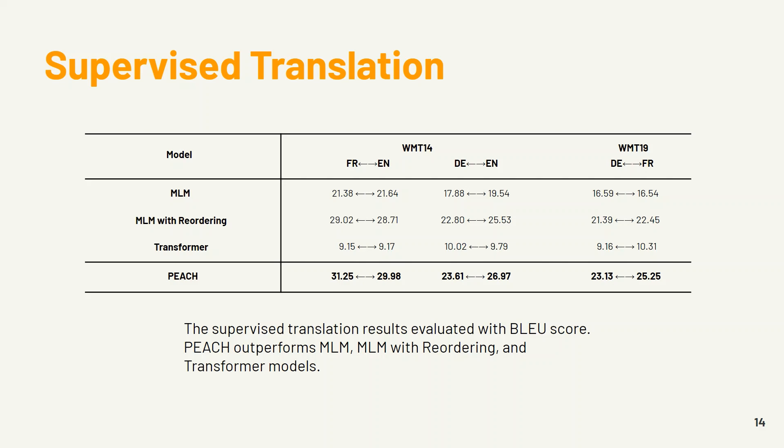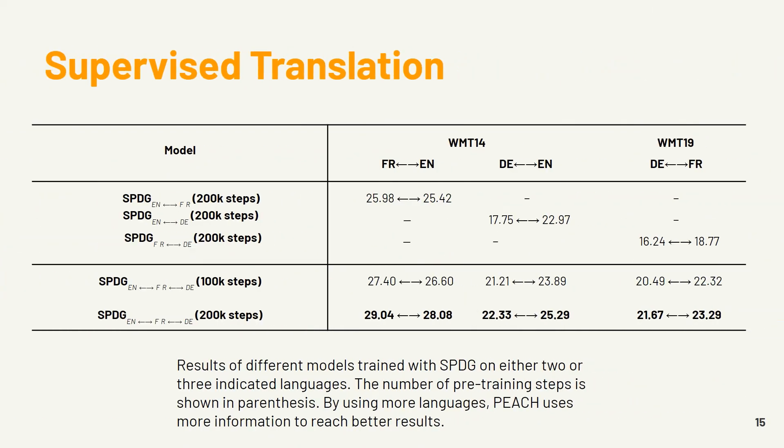As we can see here, Pitch outperforms MLM, MLM with reordering, and transformer models in different languages on WMT14 and WMT19 with a notable difference. Also, in another experiment, we compare using more than one language as the output. If we train our model on 3 languages with 200,000 steps, we can see that Pitch uses more information to reach better results. The multilinguality is a strong point for the Pitch model, as it leverages knowledge from different languages to learn more effectively.